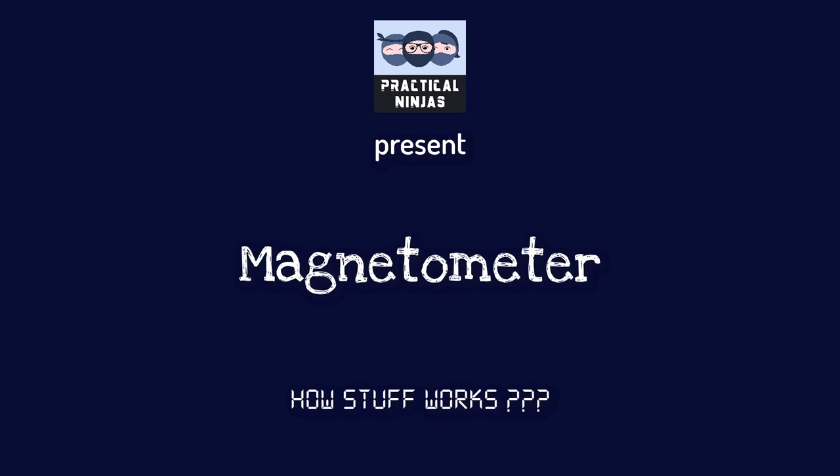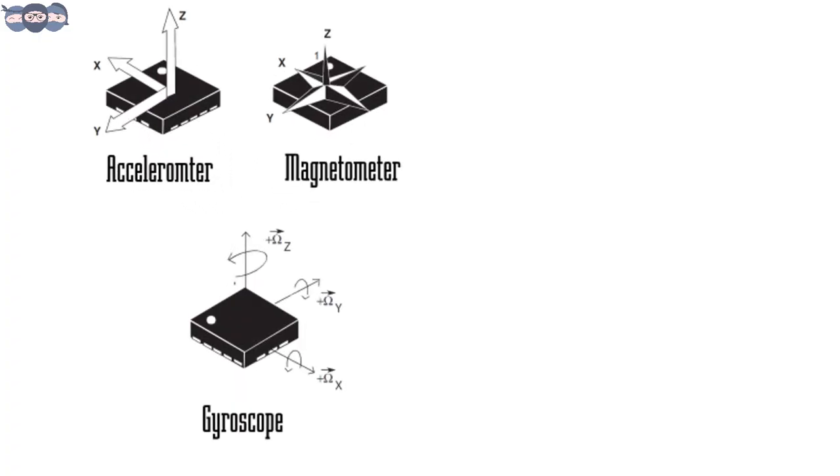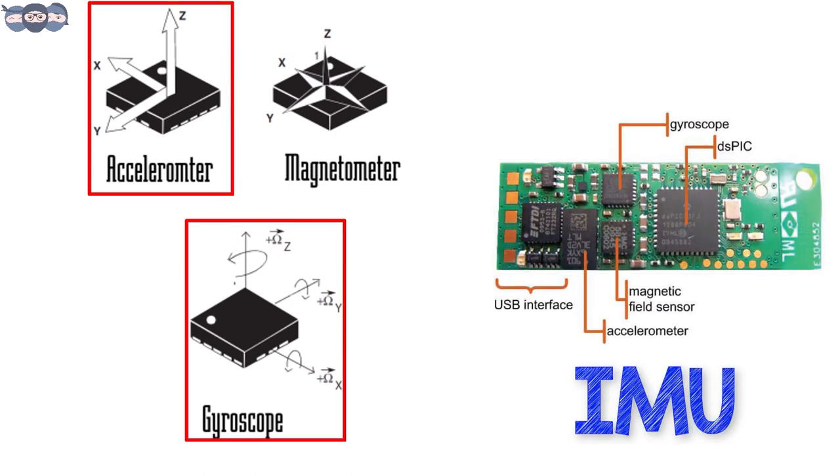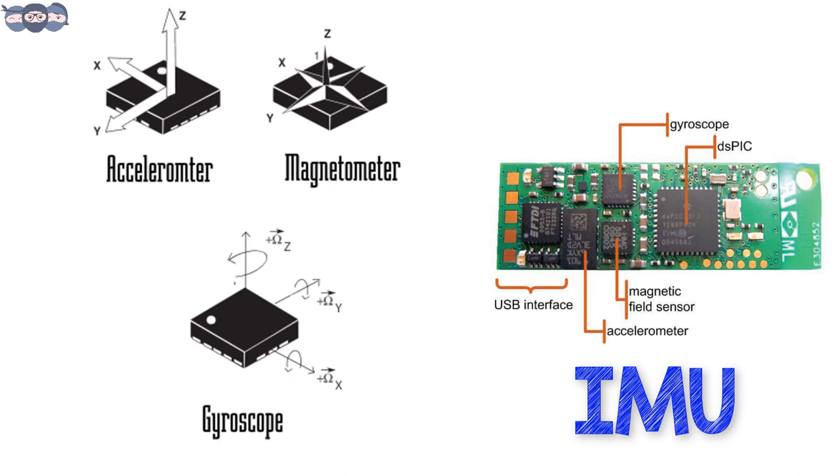Hello friends. In the previous videos, we have covered and discussed the accelerometer and gyroscope found inside an IMU. If you haven't seen those videos, kindly check the description to find the links.